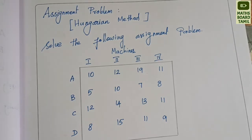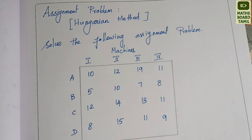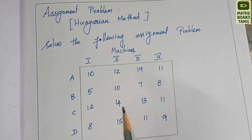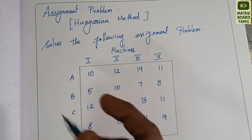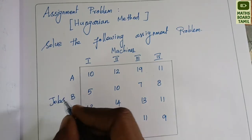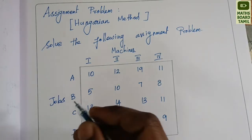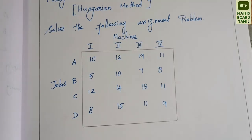We will talk about the optimum solution. We will solve the following assignment problem. We have missions 1, 2, 3, 4 and jobs A, B, C, D. First, we will check whether the problem is balanced or unbalanced.